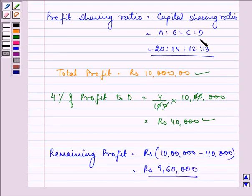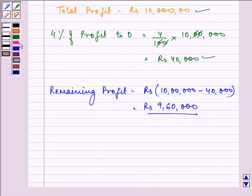That is rupees 10,00,000 minus 40,000 that comes out to be rupees 9,60,000. Now this 9,60,000 is to be divided among A, B, C and D in their capital sharing ratio.